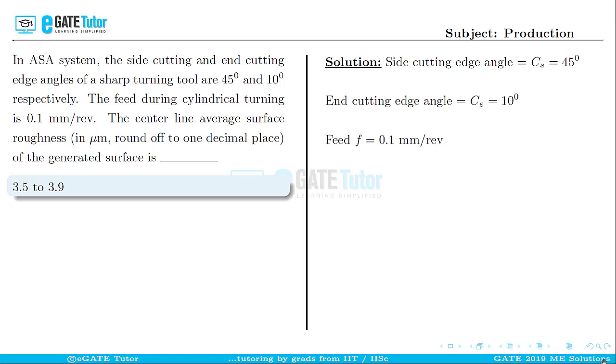Now, there is a formula to calculate the maximum peak to valley height: hmax = f / (tan Cs + cot Ce).